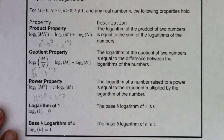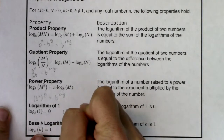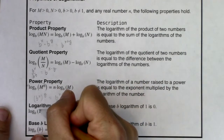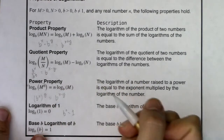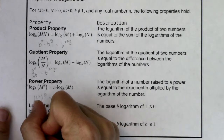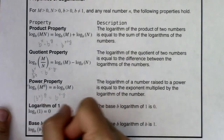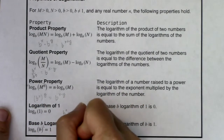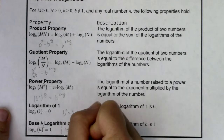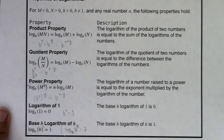For the last two properties, we've covered these in class before. Whenever your argument is one, your exponent is zero — so log base b of 1 equals zero, because b to the zero equals one. Anything raised to the zero power gives you one. When you have log base b of b, when the base of your logarithm is the same as the base of your power, the only thing that survives is the exponent. For example, log base b of b to the seventh equals seven.